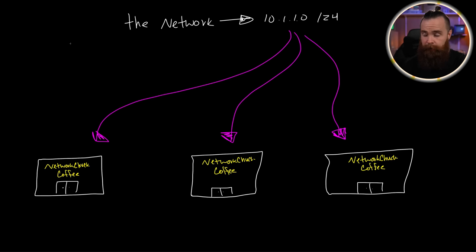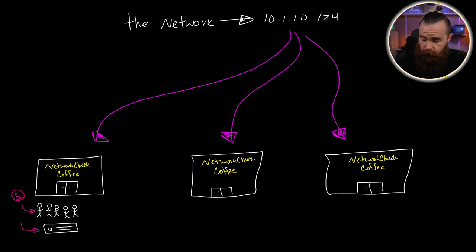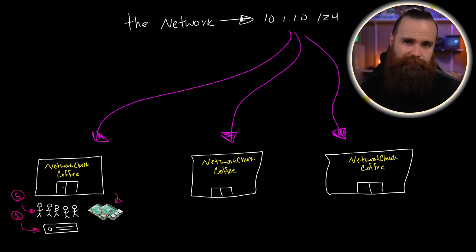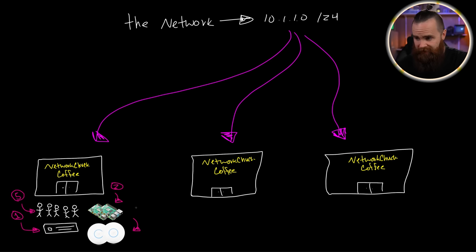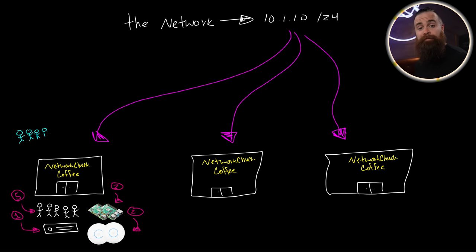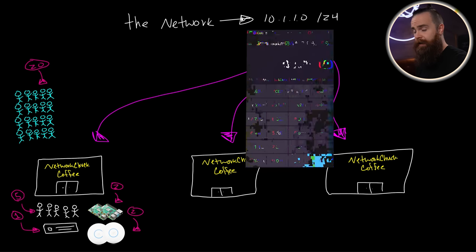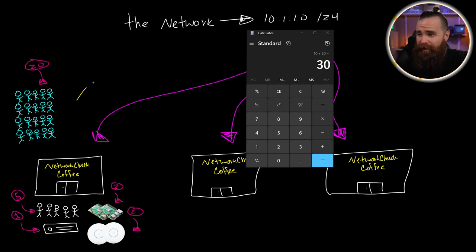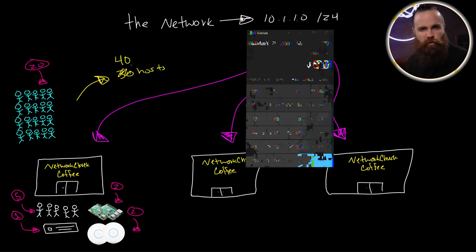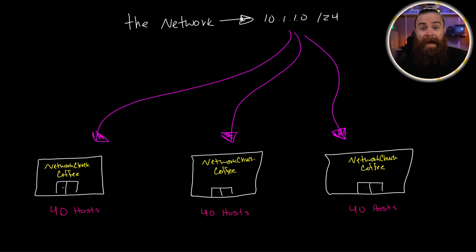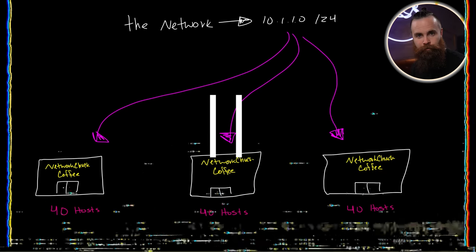Right now I have this network 10.1.1.0/24. We need to break this up and subnet it to cover these three coffee shops. I'm not just saying give me three networks out of this subnet — I need you to subnet based on how many hosts we have in each network. Each coffee shop has five employees, one server, two Raspberry Pis, two wireless access points or WAPs, and up to 20 guests. That's about 30 hosts — let's give some wiggle room, say about 40 hosts or 40 IP addresses per coffee shop.